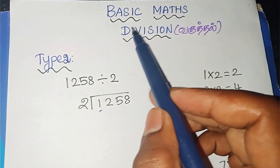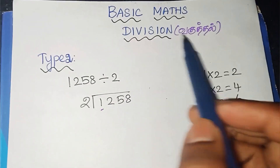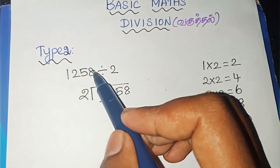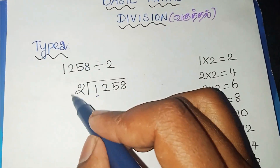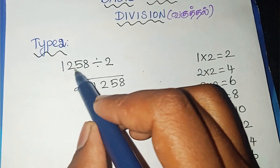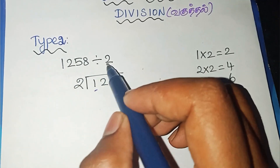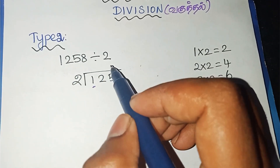In this video, we will practice the basic MAC division type 2 method. For example, if we take 1258 divided by 2.